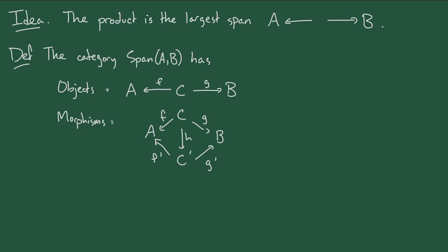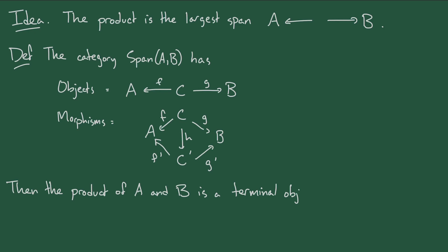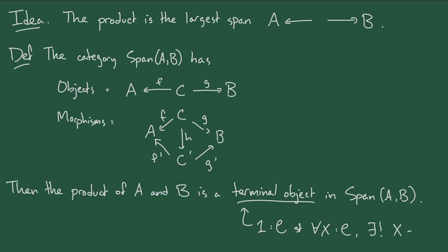Then we can say that the product of A and B is a terminal object in the category of spans from A to B — an object in the category of spans to which every object in that category has a unique morphism. This may seem like a more complicated version of the definition, but there are a few things that are nice about it. First, it draws attention to the fact that the product diagram and the input to the universal property — gamma together with the map into A and into B — have the same shape: they're both spans from A to B. By pursuing that idea further, we can get to the idea of limits and so on, so it's a very fruitful direction.